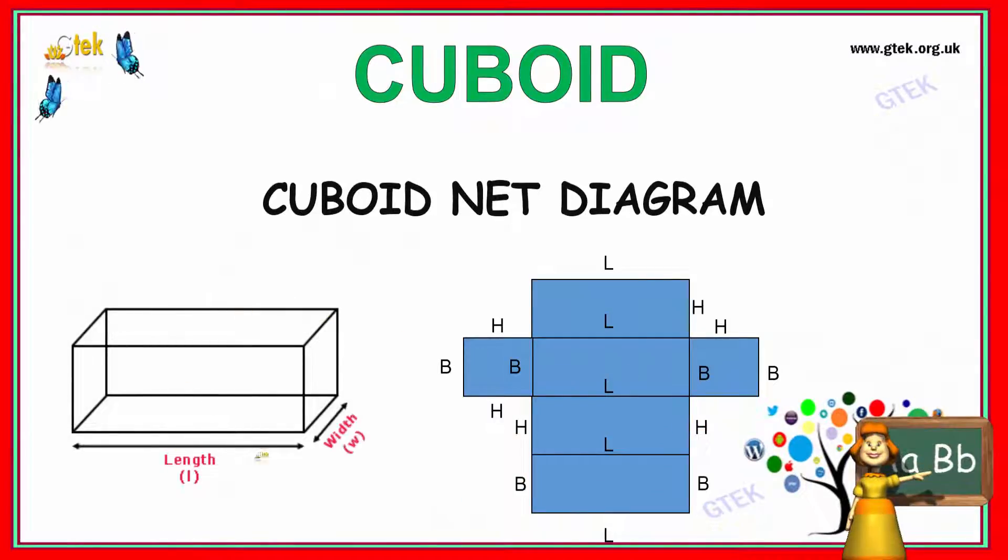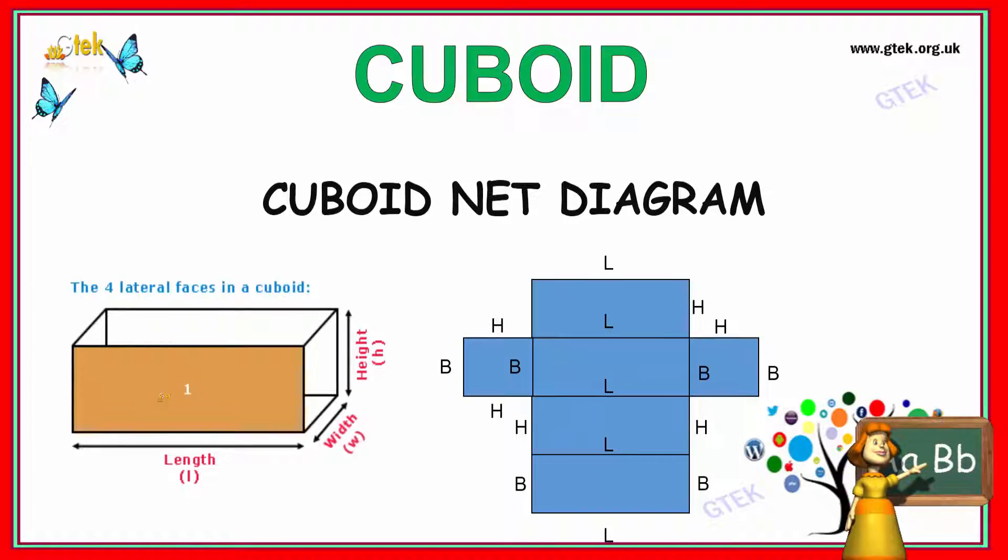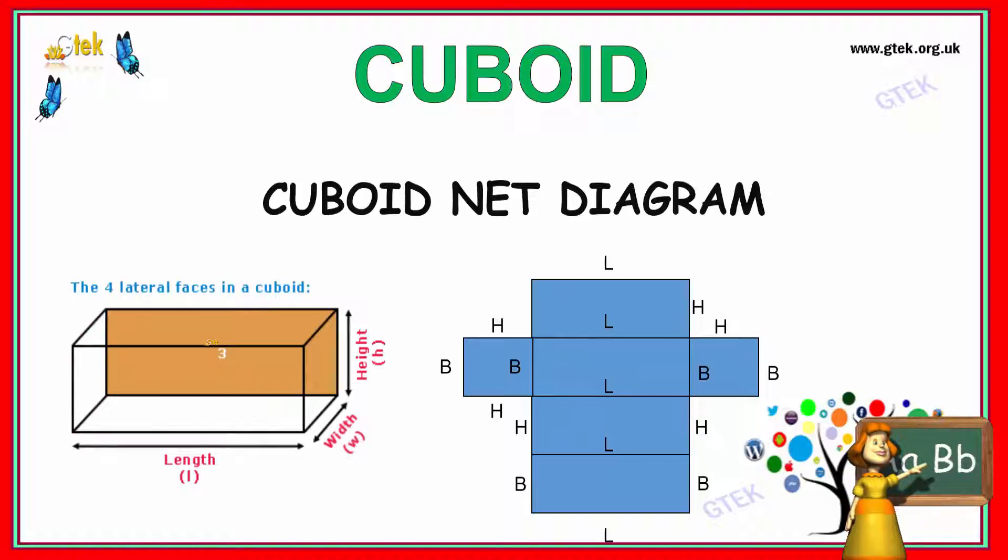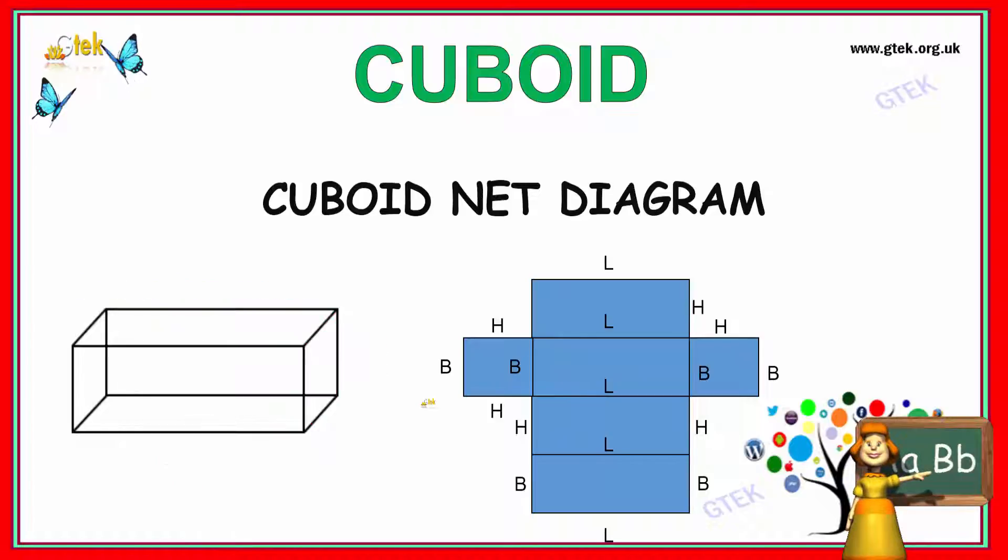This is the cuboid net diagram. You can see this is length, width, height, and there are 4 lateral surfaces in the cuboid: side 1, 2, 3, and 4. These are considered the lateral surfaces, avoiding the top and bottom.